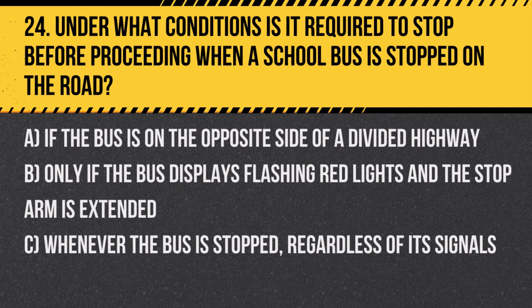Question 24: Under what conditions is it required to stop before proceeding when a school bus is stopped on the road? A. If the bus is on the opposite side of a divided highway. B. Only if the bus displays flashing red lights and the stop arm is extended. C. Whenever the bus is stopped, regardless of its signals. Answer: B. Only if the bus displays flashing red lights and the stop arm is extended. Drivers must stop to ensure the safety of children boarding or alighting from the bus.